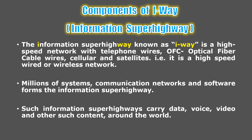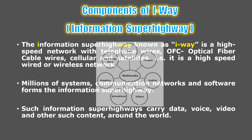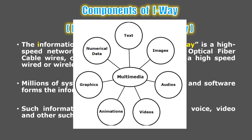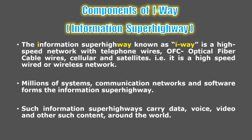Communication networks and different types of software form what is known as the information superhighway. Such an information superhighway carries different types of data — that is, multimedia — which means different types of data like text, images, audio, videos, numerical data, or graphical representation of data. The information superhighway is supposed to carry such multimedia content across the globe.